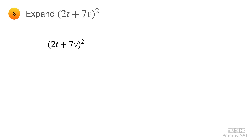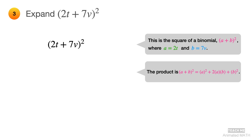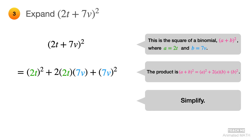Use the perfect square add times add pattern, which is (a + b)², but with a equal to 2t and b equal to 7v. Its product is a² + 2ab + b². Substitute 2t for all a's and 7v for all b's, then simplify the expression. The final answer is 4t² + 28tv + 49v².